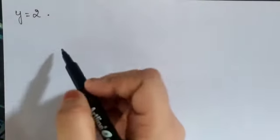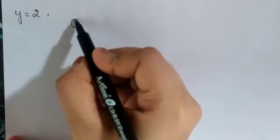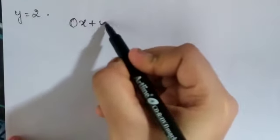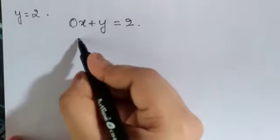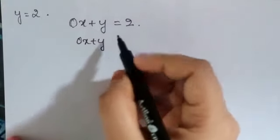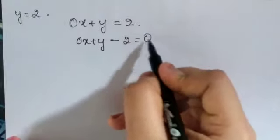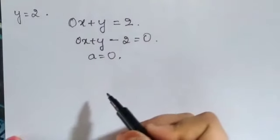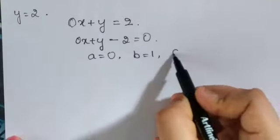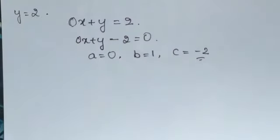Similarly, for y equals 2, we need to represent it as a linear equation in two variables. Since only y is given, x is missing, so we write 0x plus y equals 2, which becomes 0x plus y minus 2 equals 0. Here a equals 0, b equals 1, and c equals minus 2.